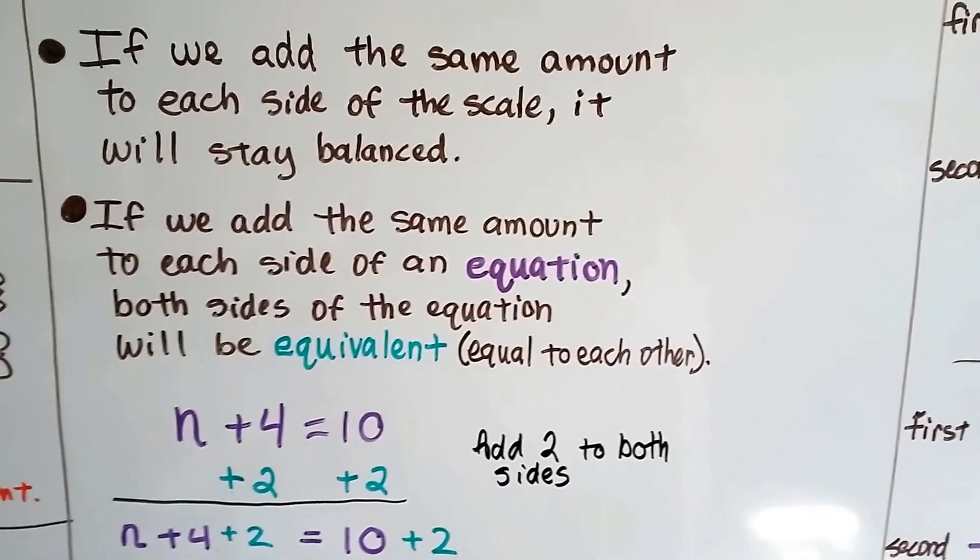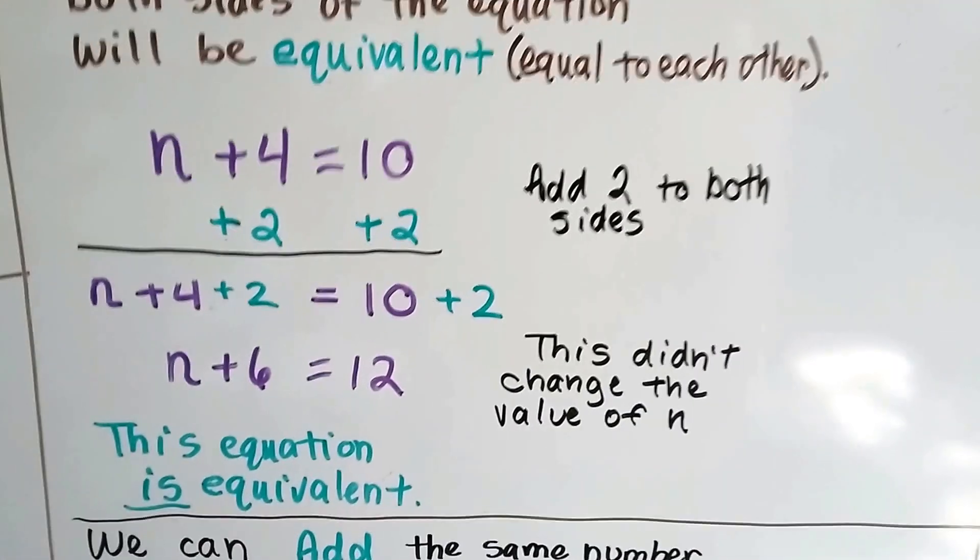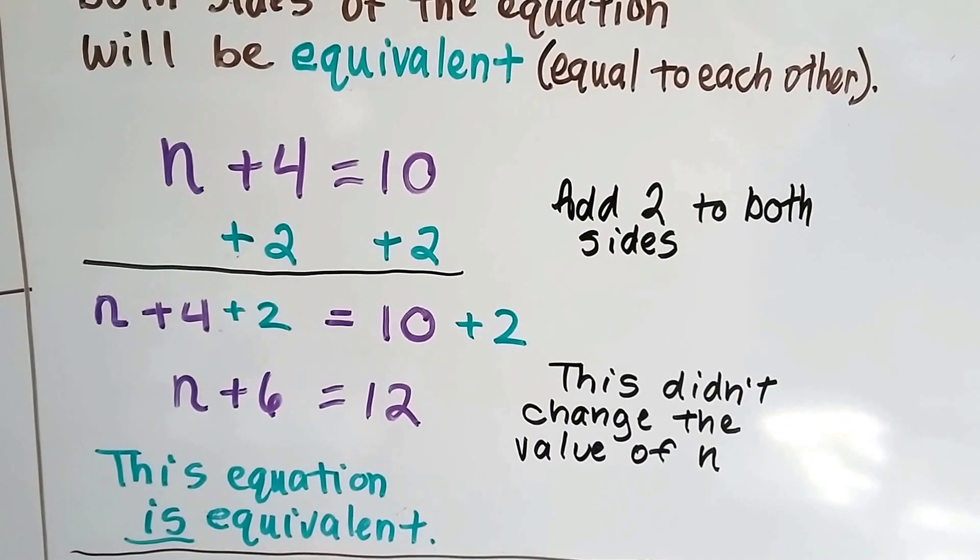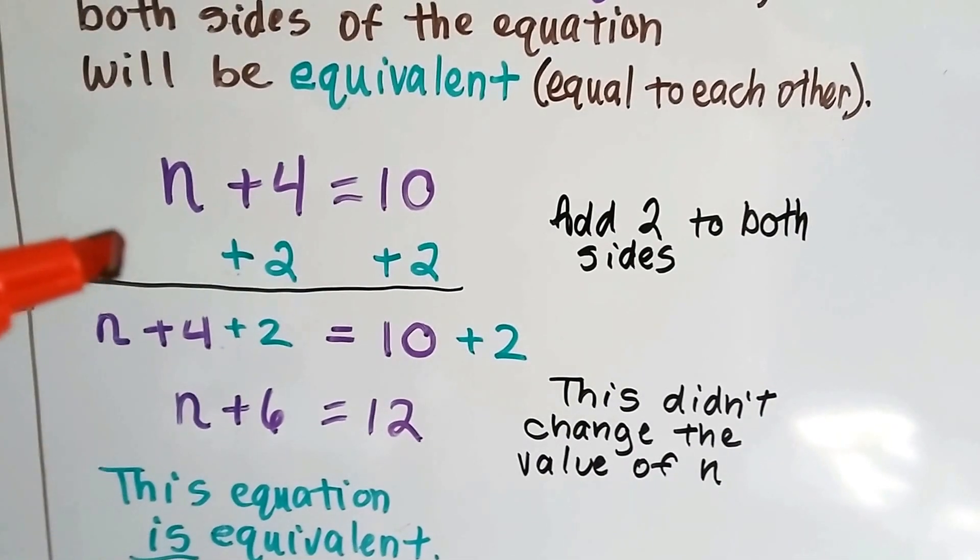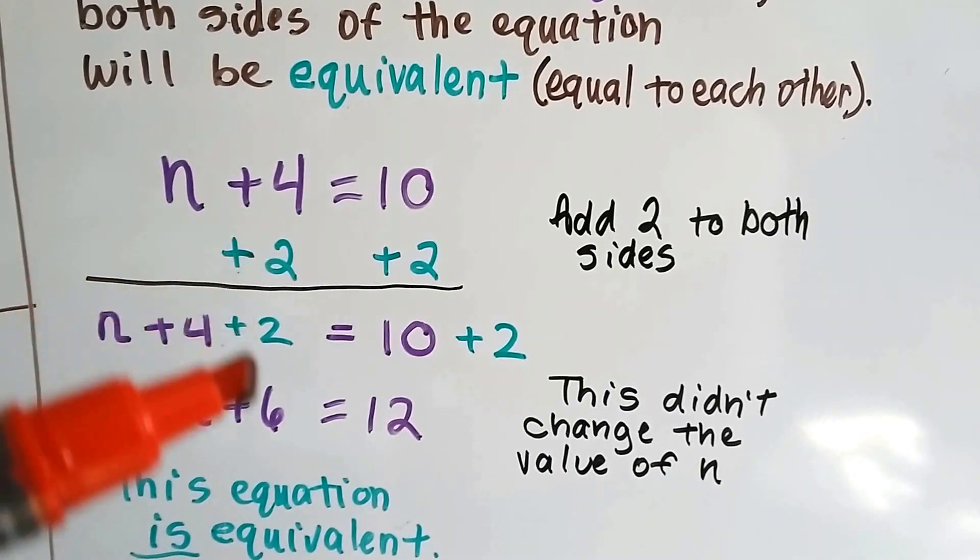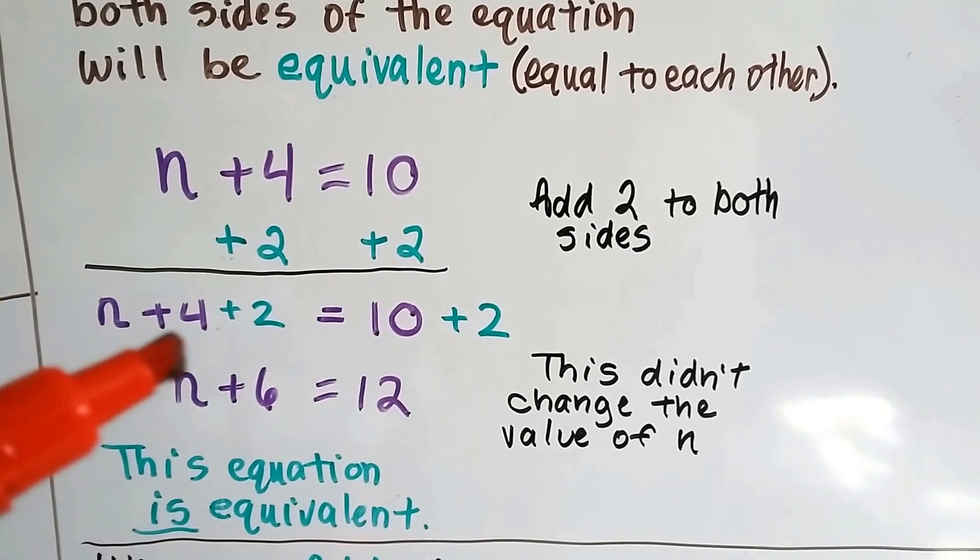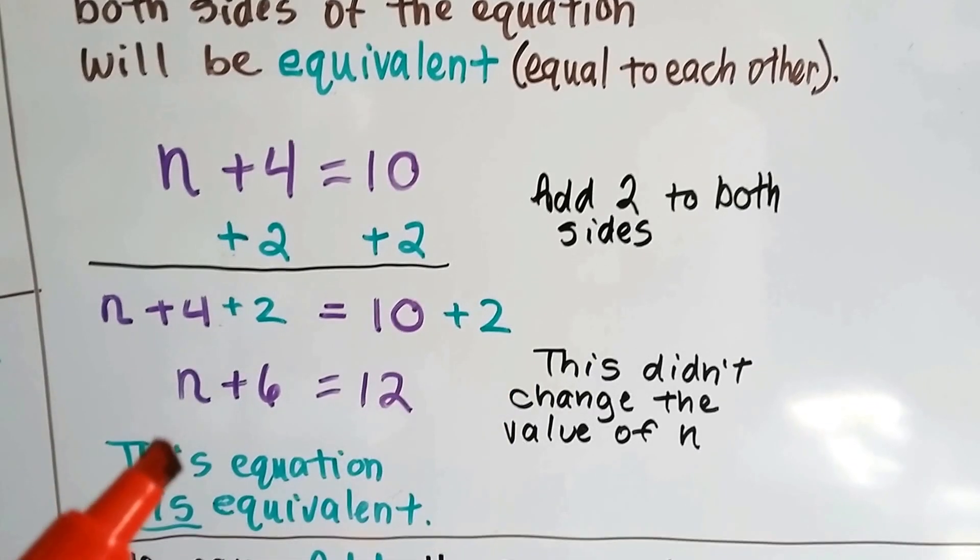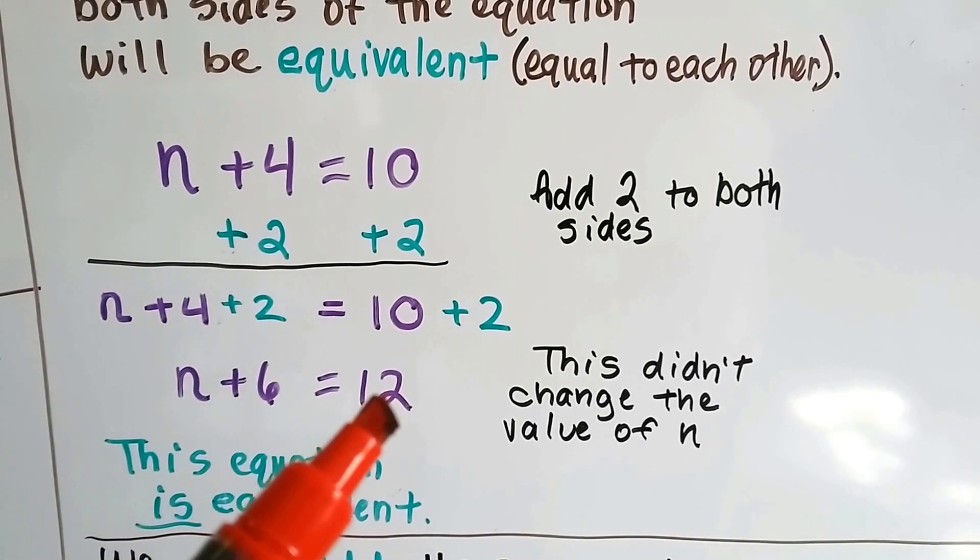If we add the same amount to each side of an equation, both sides of the equation are going to be equivalent. They're going to be equal to each other. So let's take a look at this one. We've got n plus 4 equals 10. And if we add 2 to both sides, we add 2 to this side of the equal sign and 2 to that side of the equal sign. Now we've got n plus 4 plus 2 and 10 plus 2. Well, this didn't change the value of n. Now we've got n plus 6 equals 12.